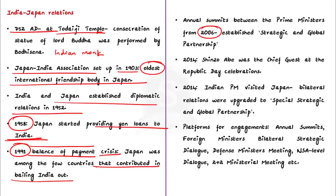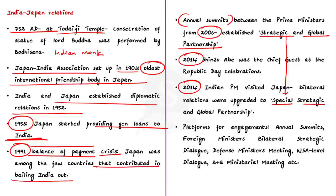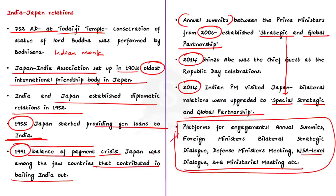In 2006, both sides decided to hold annual summits every year and established a strategic and global partnership. In 2014, former Japanese PM Shinzo Abe was the chief guest at India's Republic Day celebration. During PM Modi's official visit to Japan in 2014, the bilateral relations were upgraded to a special strategic and global partnership. Apart from annual summits, foreign ministers' dialogues, defense ministers' meetings, NSA-level dialogues, and 2+2 ministerial-level meetings — which involve external affairs and defense ministers from both sides — have ensured regular engagement. The 2+2 dialogue is a ministerial-level meeting where external affairs and defense ministers from both sides discuss areas of common interest.